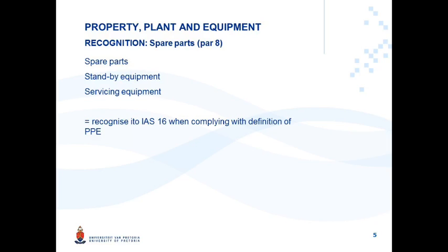To summarise: where an entity incurs costs for spare parts, standby equipment or servicing equipment that is associated with its current Property Plant and Equipment, those costs can only be capitalised as PPE if they meet the definition of PPE. PPE rules have as an objective to prevent the overstatement of Property Plant and Equipment items. Therefore, these costs very specifically need to comply with the definition criteria before they can be recognised as Equipment. If they don't meet the definition of PPE, these costs will be classified as Inventories, and as the inventories are used, they will be expensed through profit or loss.